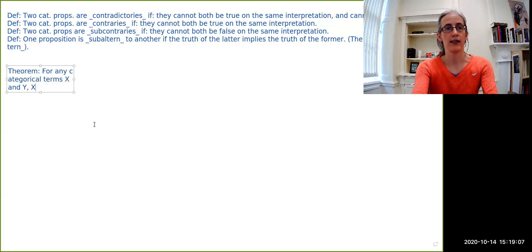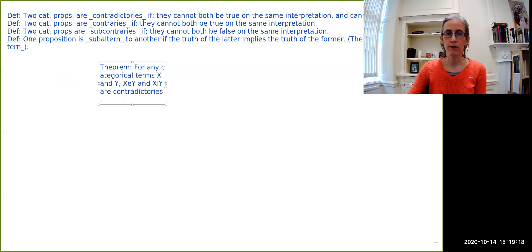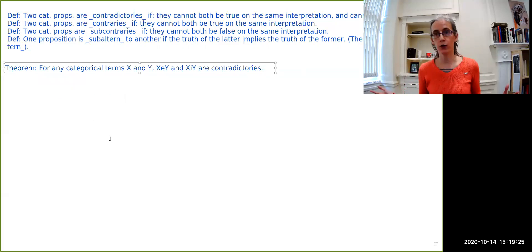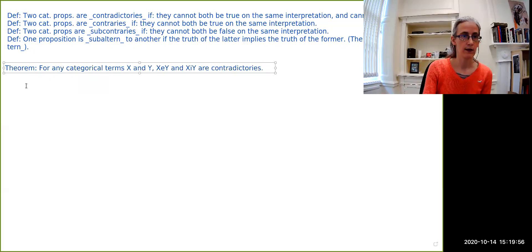So the theorem I'm going to prove is that for any categorical terms x and y, x e y and x i y are contradictories. So this is unlike what we've had before, where I've given you definitions of things. And you can define things to be however you want. This is one of the glorious freedoms of being a logician. You can make up whatever definition you want. The theorems, on the other hand, have to be demonstrated. I have to give you an argument for them on the basis of the definitions that we have. So what are the relevant definitions? We have the definition of contradictory. We also have the definition of truth and falsity.